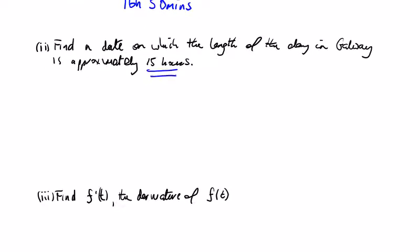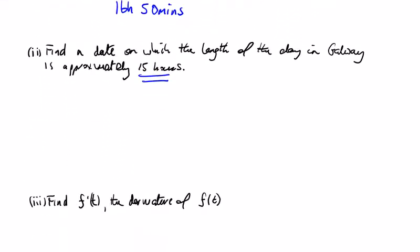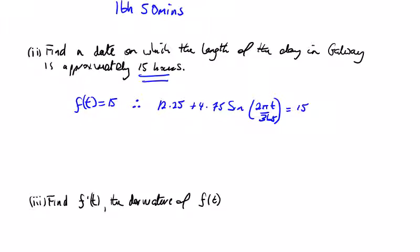Find the date on which the length of the day in Galway is approximately 15 hours. We're given the answer, so we're looking for t. So f(t) = 15, therefore 12.25 + 4.75 × sin(2πt/365) = 15. Isolating the sine term: sin(2πt/365) = (15 − 12.25) / 4.75.